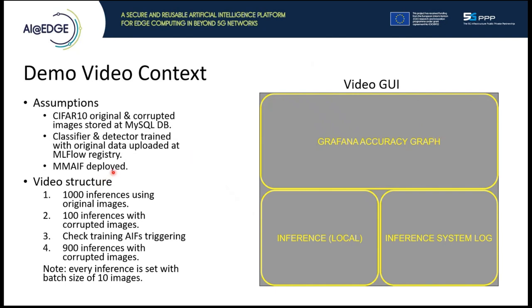The video will be separated into four different stages. In the first one, we will send 1,000 inferences using original images. In the second part, we will make 100 inferences using corrupted images — in that case, the detector will be called and the training AIFs will be triggered because the detector will detect this case of drift. Finally, we will finish the inference with corrupted data with the remaining 900 inferences to see how the accuracy evolves. Each inference uses a batch size of 10 images, so each inference sends 10 images to the model and the detector.